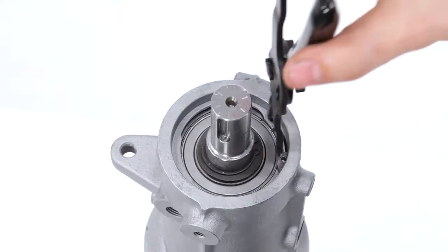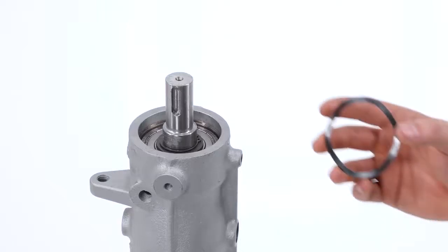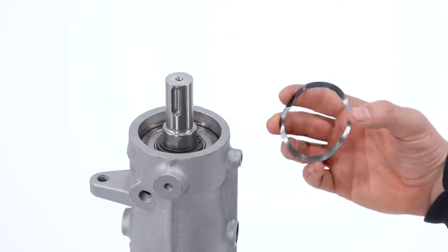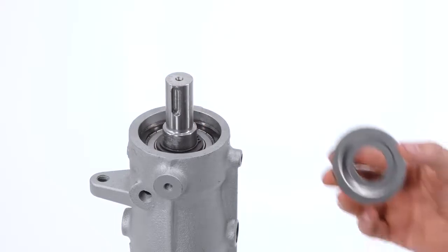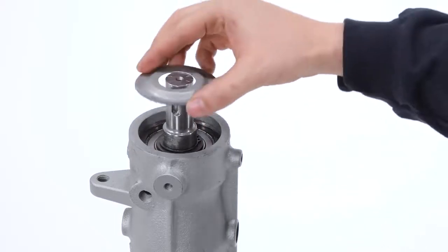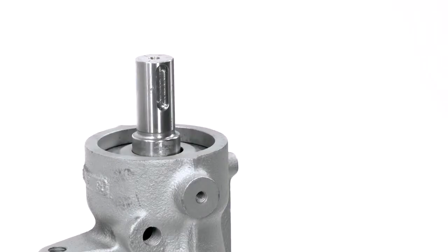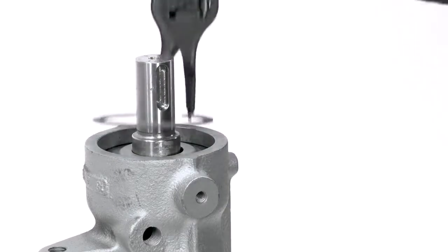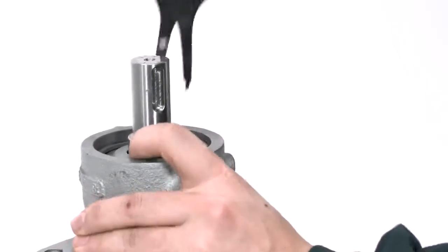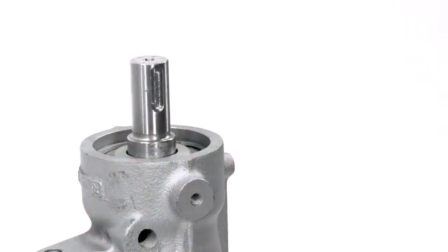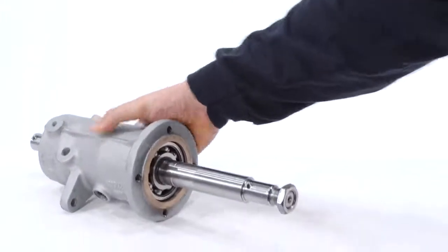Remove the outer snap ring. Install the spring disk followed by the nylos ring. Add the outer snap ring. Remove the nut to prepare the shaft for impeller installation.